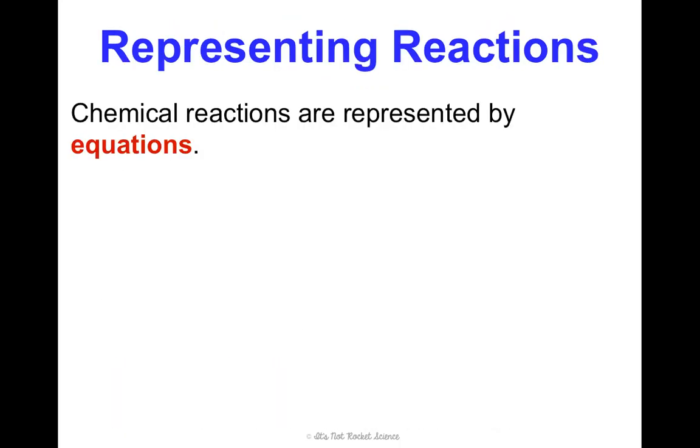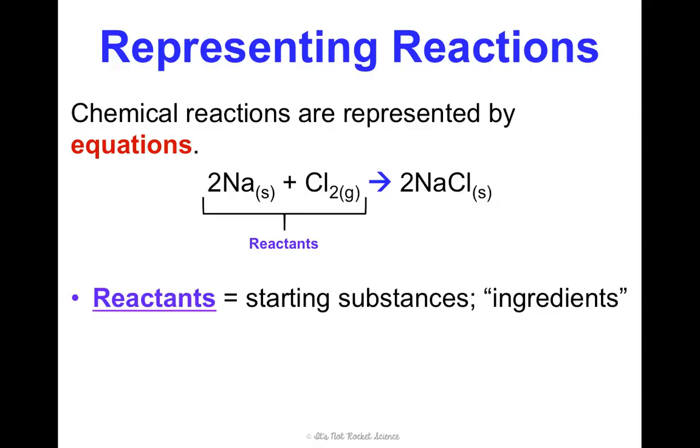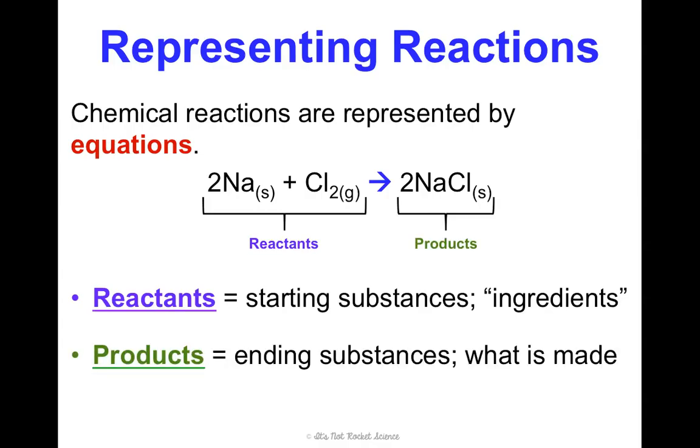We represent chemical reactions with equations. So this is an example of one. I'm going to break down what everything means on this over the next few slides. First, we have everything to the left of my arrow. Those are my reactants. They are my starting substances or my ingredients. Everything to the right of the arrow is a product. It is an ending substance, it's what's being made. When you're reading this as a sentence, that arrow that I put in blue, that is yields or produces. So the reactants yields or produce products.